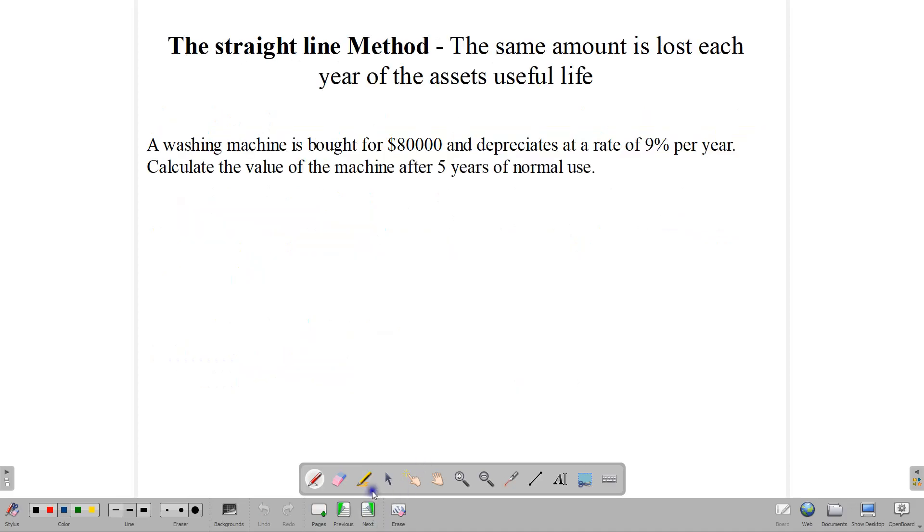The first method, the straight line method. In this method, the same amount of money is lost each year for the asset's useful life. So let's look at this question. A washing machine is bought for $80,000 and depreciates at a rate of 9% per year. Calculate the value of the machine after five years of normal use. In this section, we're going to use the straight line method.